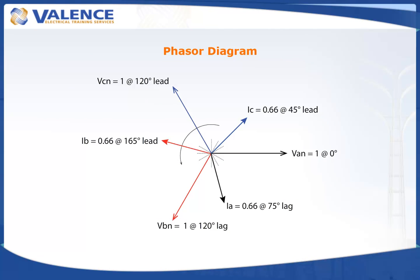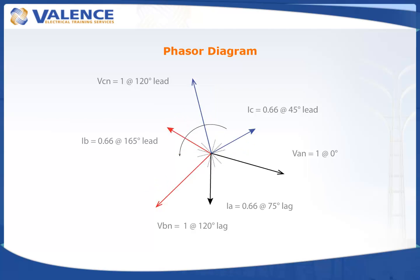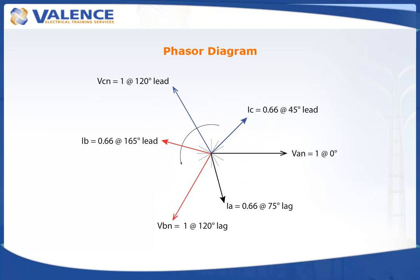Phasors are like vectors, except all phasors on a phasor diagram are rotating in the same frequency. Each phasor on the drawing has a magnitude and an angle. Phasor diagrams are often referred to as vectors because they look the same on a piece of paper, but phasors are really vectors with a rotation.